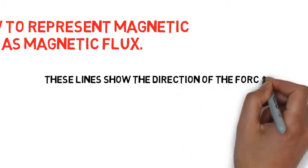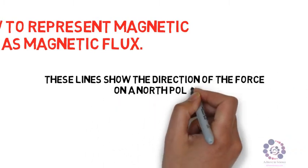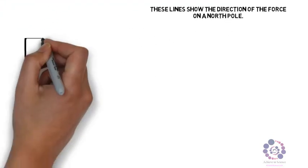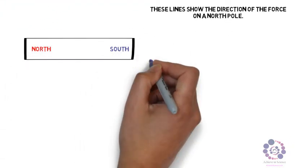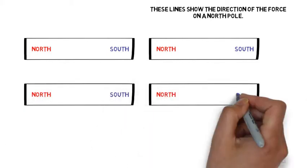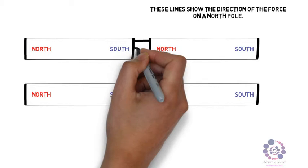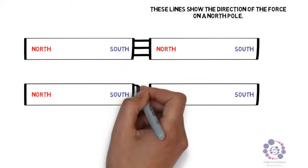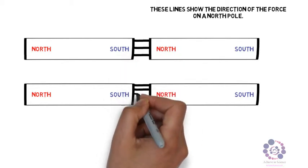Now let's have a look at some diagrams. Here we have two sets of bar magnets. Both sets are set up in identical ways. We can draw the magnetic field lines, i.e. the magnetic flux, between both of these magnets. As you can see, the field lines run from North to South.